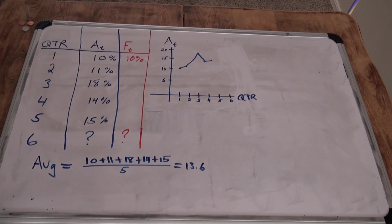So that's using a simple average. We took all of our data and divided by the amount of periods or data elements we have, 13.6. So that would be our prediction for quarter 6 using a simple average.